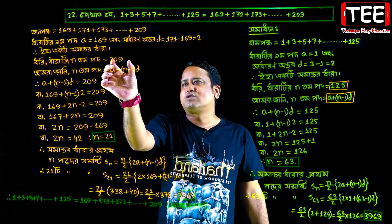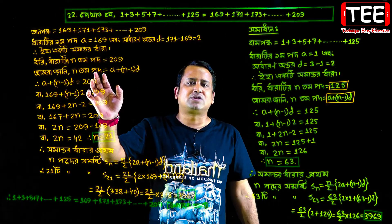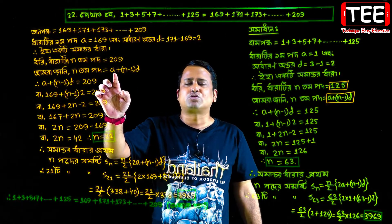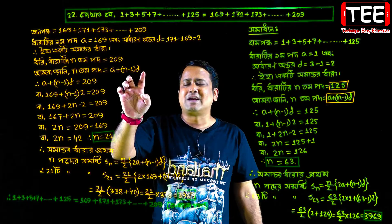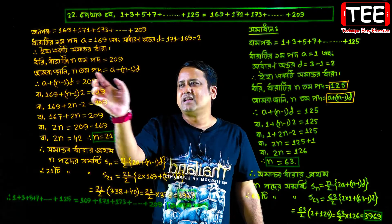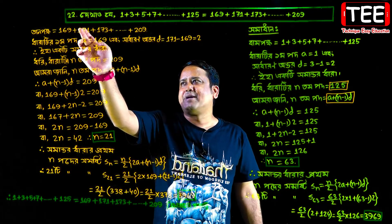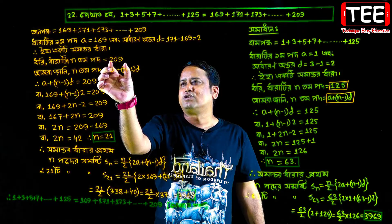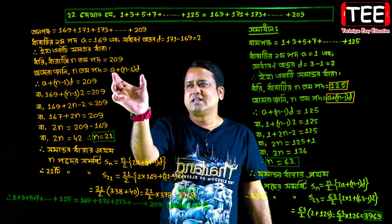So now we read: the last term is 209, and our nth term formula is a plus n minus 1 into d. That is the nth term formula, and our nth term is 209.